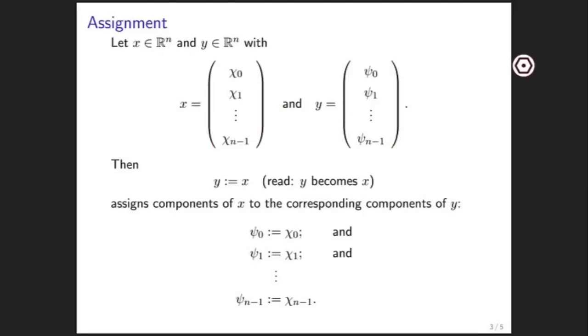Now, in the computer, we store vectors as arrays. So the components are stored in memory. To copy one vector into another, what you have to do is copy the individual components of one vector into the other.